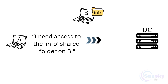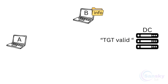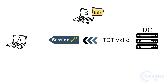A now wants access to a shared folder on system B. It sends its TGT to the DC as proof of authentication. The DC verifies the TGT and generates a session key specifically for communication between A and B, allowing A to access B's shared folders securely. If SMB signing is enforced on system B, this session key is used not only for encryption, but also for signing each SMB packet, ensuring the integrity of the communication.